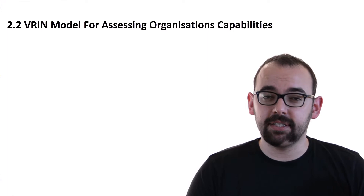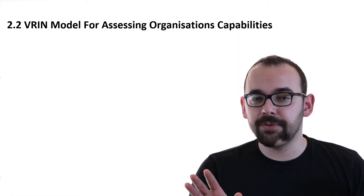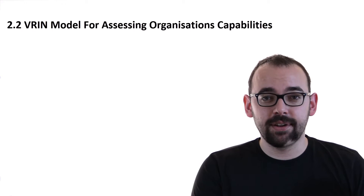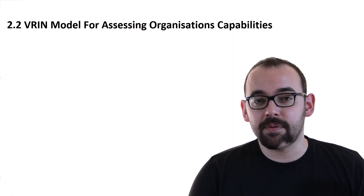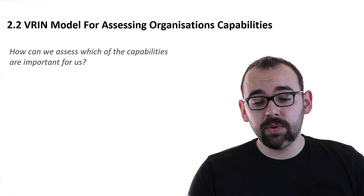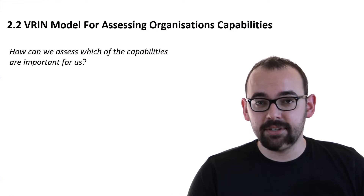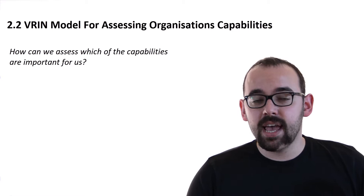Hello and welcome to another video in the course where we are learning about business strategy. In the previous video we discussed strategic capabilities, core competencies, or however you call them. These are important so that our organization can survive on the market and at the same time be profitable and more successful. Now in this video we are going to talk about the so-called VRIN model for assessing an organization's capabilities — how we assess which capabilities are important for us.